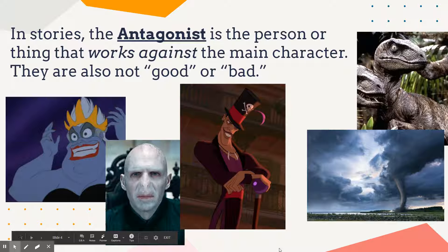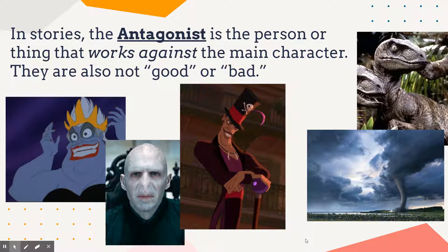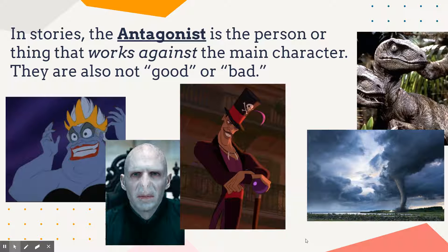On the opposing side of our protagonist, we have the antagonist. The antagonist is the person or thing that works against the main character. They are also not good or bad. The reason we say antagonist is because they antagonize the main character — they create the problems for them. Sometimes they're direct and want to do that. You might have characters like Ursula, who worked directly against Ariel in The Little Mermaid — she was out to get her.